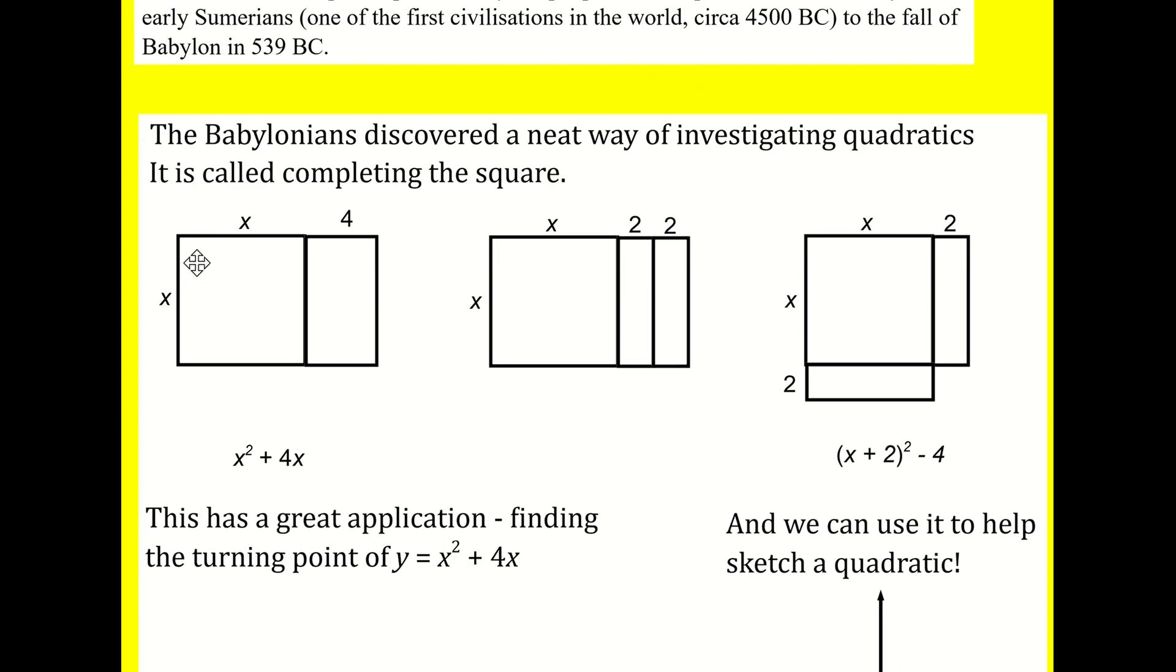If you have x squared plus 4x, which they would have represented as areas. So, we've got this square here, which has an area of x squared. And this here will have an area of 4x. If we add them together, we'll get x squared plus 4x. They looked into how they could write that in a slightly different way, which has lots of uses. If we split the 4 in half into 2 and 2, I've got the same shape. But now if I take this right-hand rectangle and move it down and rotate it, then what I get is this thing on the right.